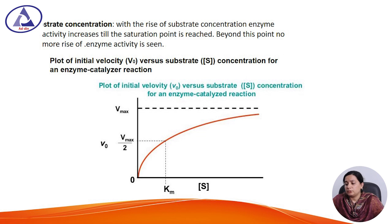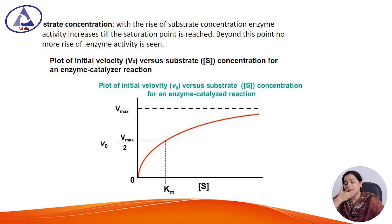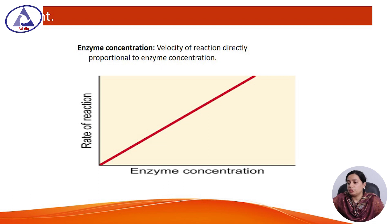A plot of initial velocity against substrate concentration gives the Michaelis-Menten curve. The Michaelis constant (Km) is the substrate concentration at which the enzyme activity reaches its half-maximum velocity. Enzyme concentration is also an important factor — the velocity of the reaction is directly proportional to the enzyme concentration.